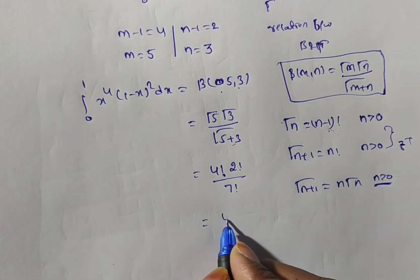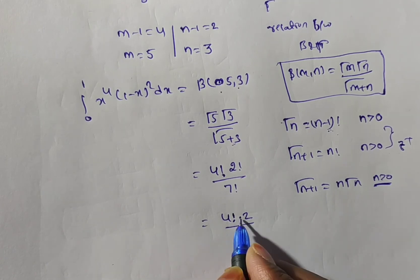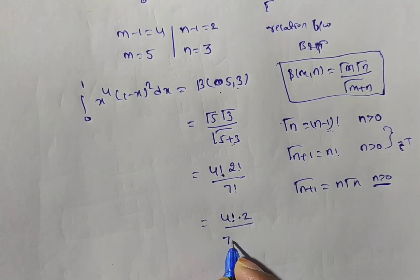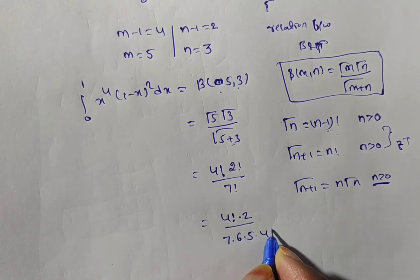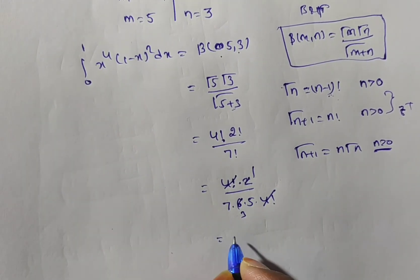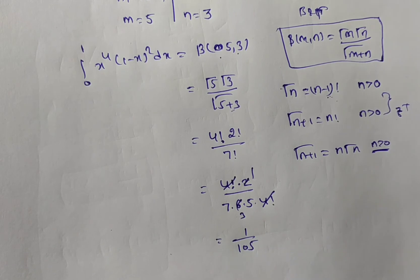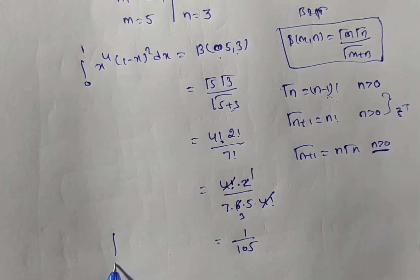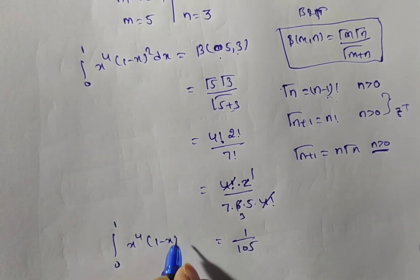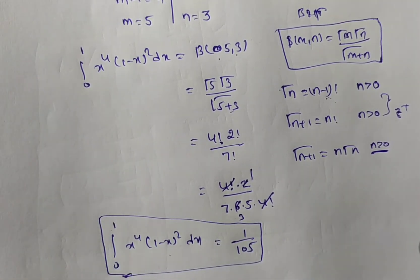If you simplify this, 4 factorial into 2 factorial, I can write directly 2. The 7 factorial, I can split like 7 into 6 into 5 into 4 factorial. So, 4 factorial and 4 factorial getting cancelled. 2 times 1 is 2, 2 times 3 is 6. So, 1 by, here 15 times 7 is nothing but 105. So, the value of integral 0 to 1, x to the power of 4 into 1 minus x squared dx is equal to 1 by 105.